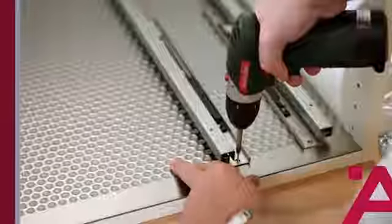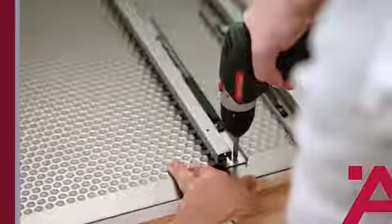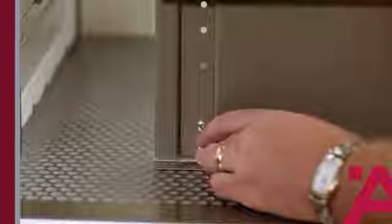Attach the drawer slides using the included screws. Then assemble the frame holder to the pullout with the four bolts and nuts provided.